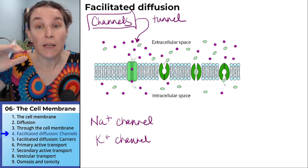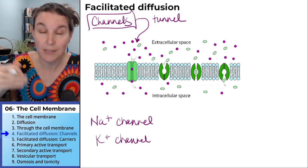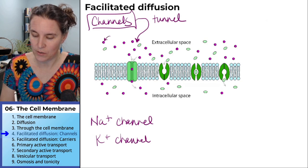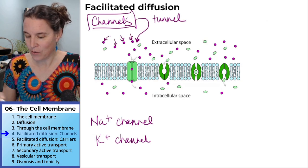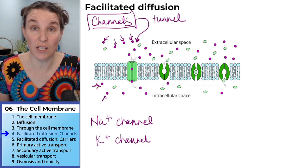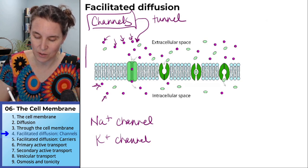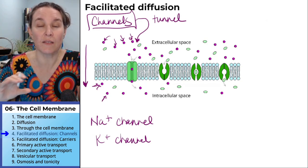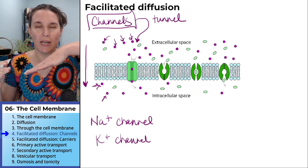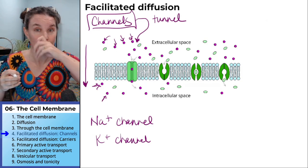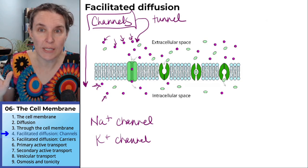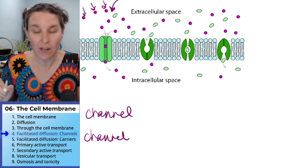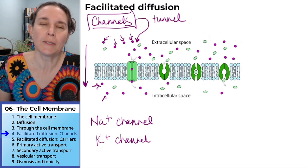Channels let their specific molecule through down a concentration gradient. In this case, we have little pink dots. The concentration gradient of pink dots is into the cell — there are more pink dots outside of the cell than inside, which means the pink dots are going to want to move in. For whatever reason they can't get through the cell membrane on their own, so they need that channel to provide the route.